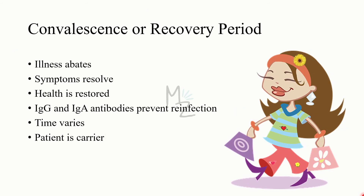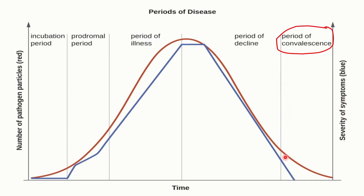On the graph, both the number of pathogens and the severity of symptoms decrease during the decline period. The last stage is convalescence, or the recovery period. Illness abates — meaning decreases — symptoms resolve, and health is restored. IgG and IgA antibodies (immunoglobulin G and immunoglobulin A) prevent reinfection. Time varies depending on the severity of the disease and the type of infection. The patient can still be a carrier: they have recovered and symptoms are gone, but they are still able to transfer the pathogen to others. On the graph, the number of pathogens has decreased but does not reach zero, while symptoms decrease to zero.